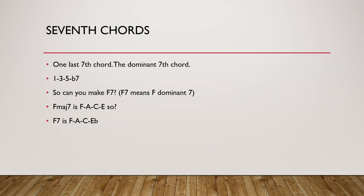There is one last chord: the dominant 7 chord. It is 1, 3, 5, and flat 7. For example, F7 — this '7' symbol means dominant 7. The major 7 of F is F, A, C, E. We flatten the 7th note to E flat. So F, A, C, E flat is the dominant 7th chord: 1, 3, 5, and flat 7.